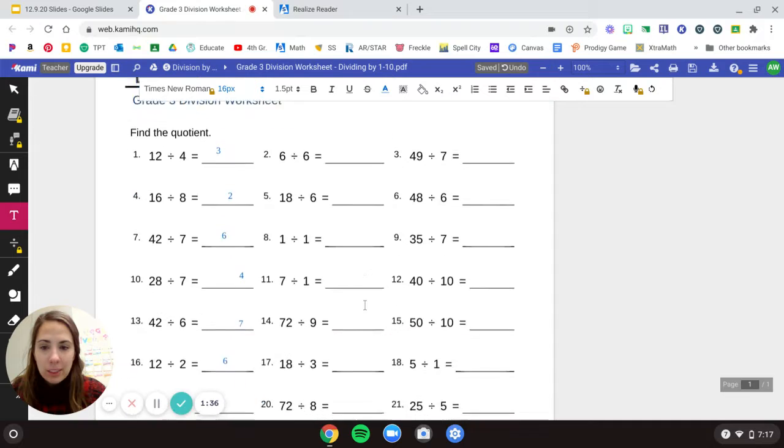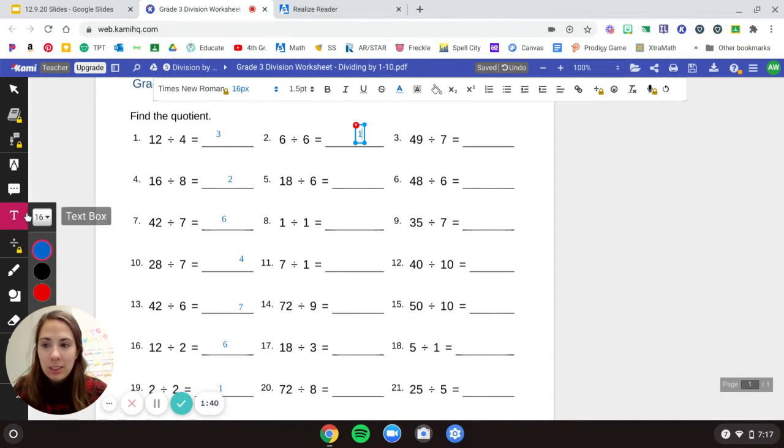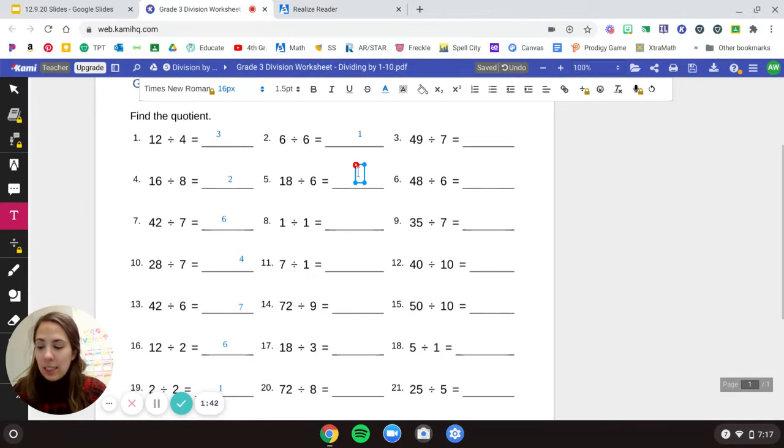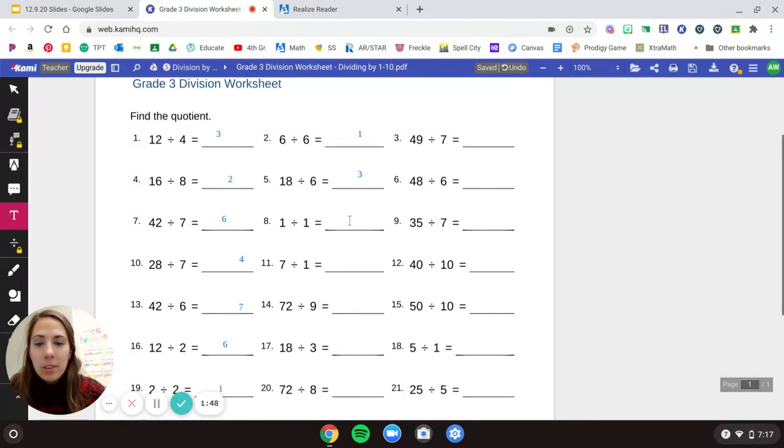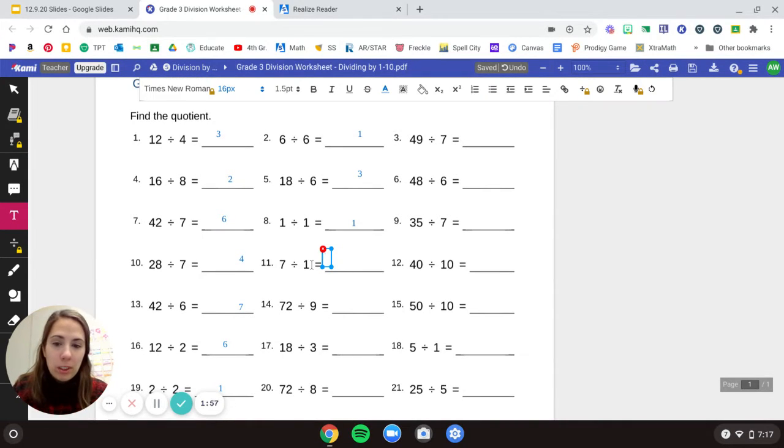Go back up to the top. 6 divided by 6 is 1. 18 divided by 6 is 3, because 6 times 3 is 18. 1 divided by 1, that was a really tricky one. It's 1. 7 divided by 7, 7 divided by 1 is 7.